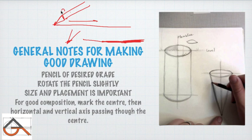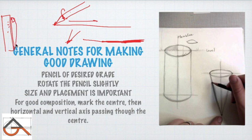When using a scale, rotate the pencil slightly so the edges stay even automatically — otherwise one side becomes bigger than the other. So rotate the pencil slightly. Also, size and placement are more important than anything else for good compositions.